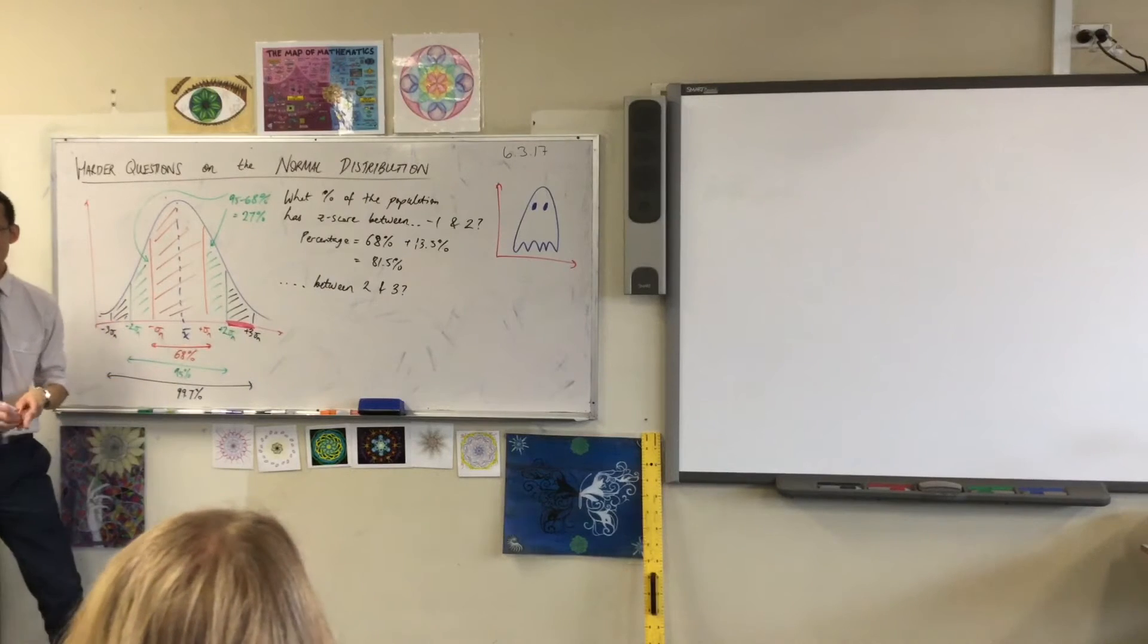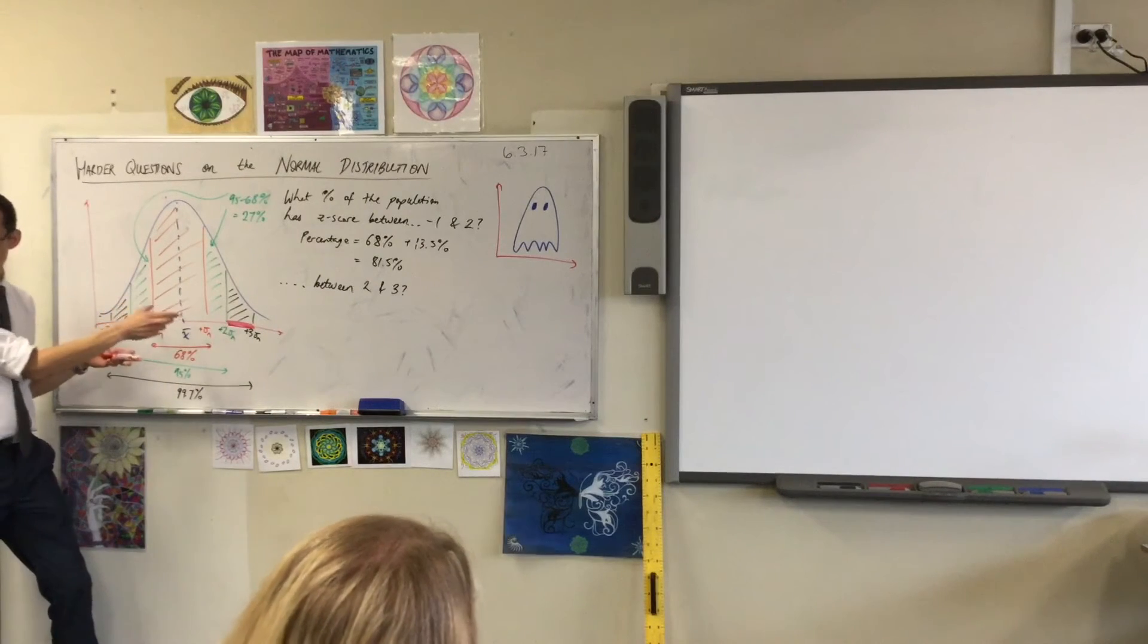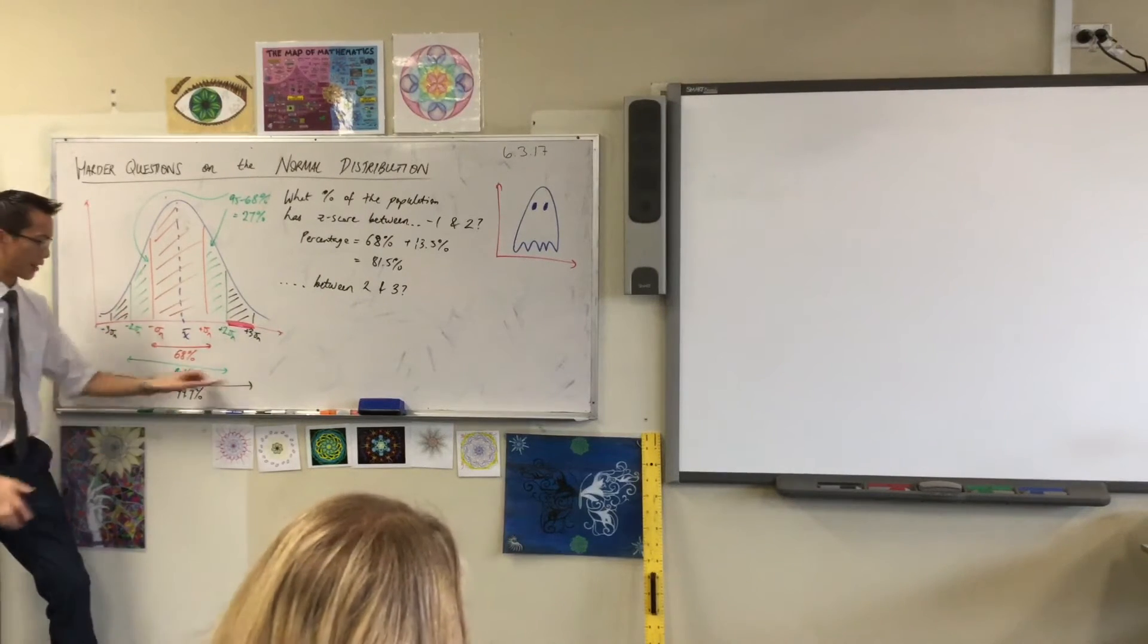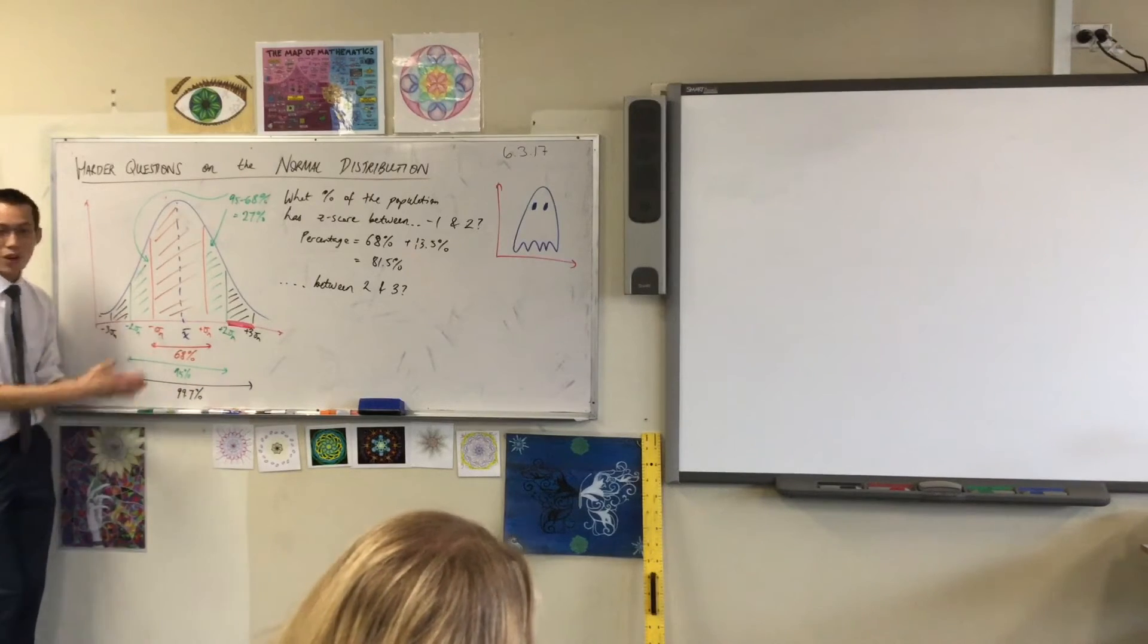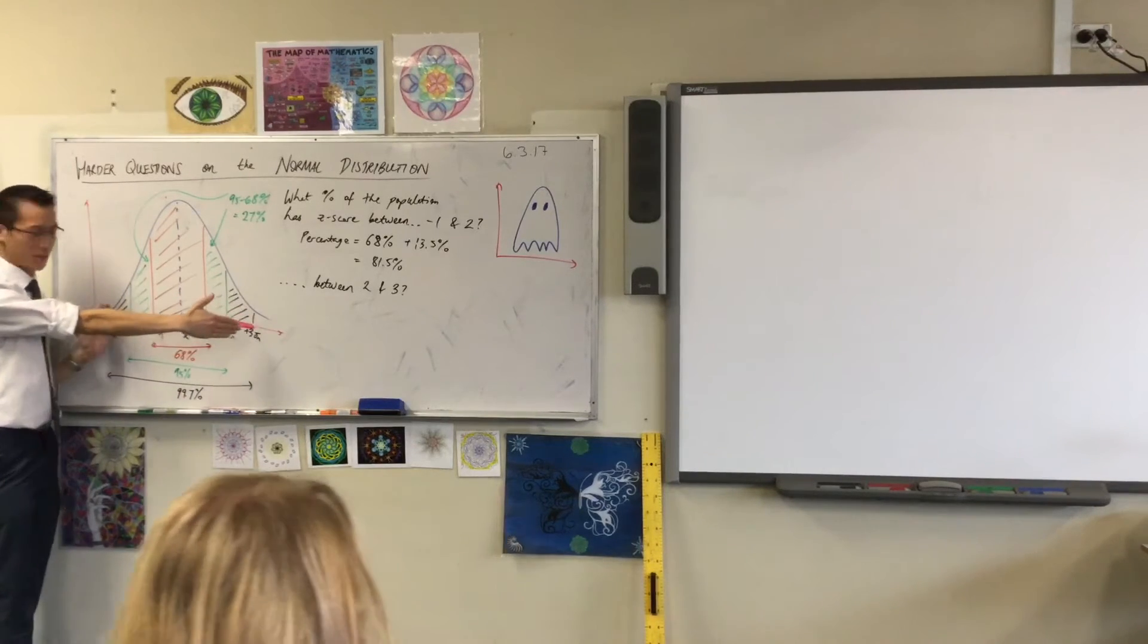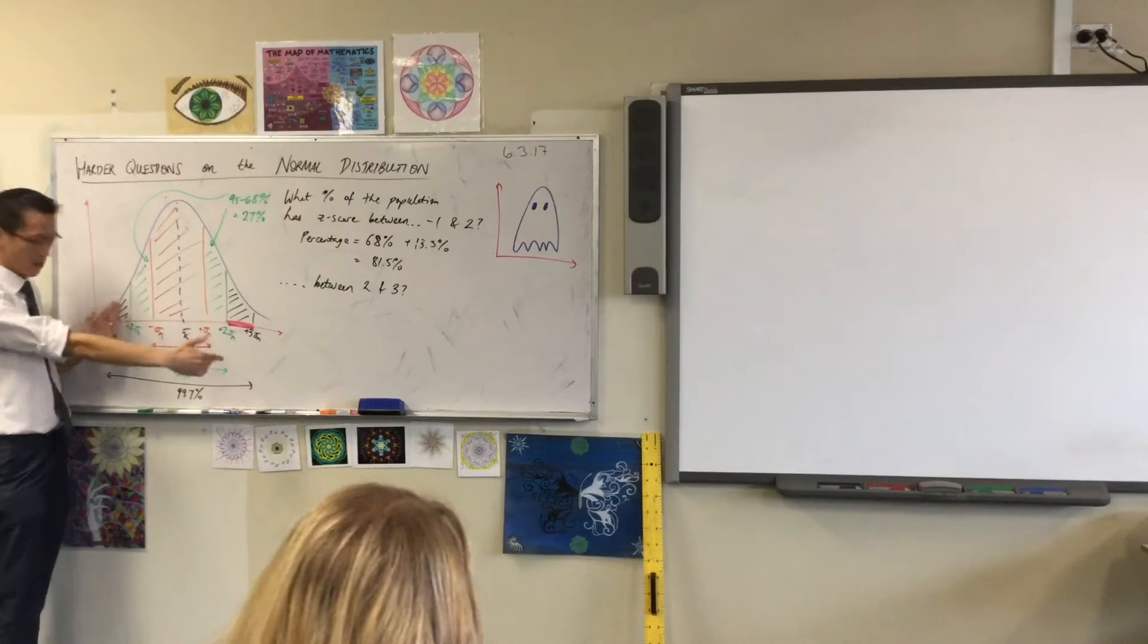Okay, so all I need to do is work out how big is that little strip there. Now we know if we went all the way out, we have 99.7, that's what this says.